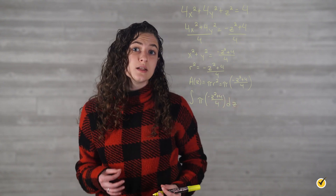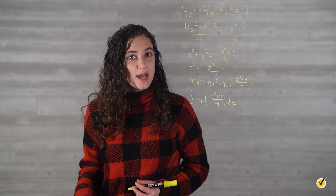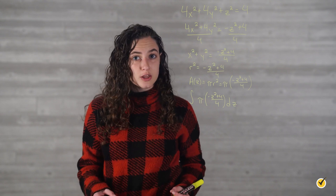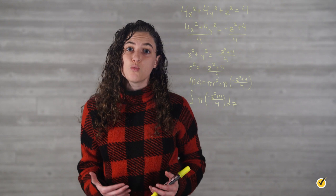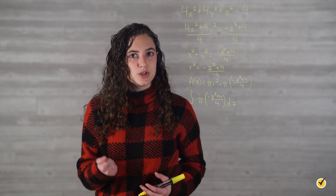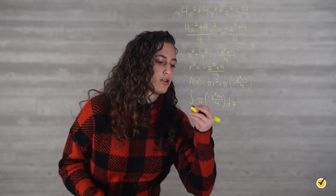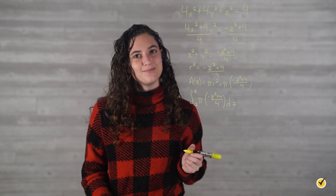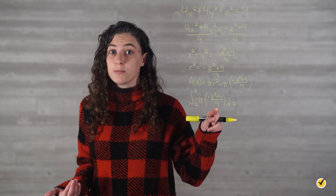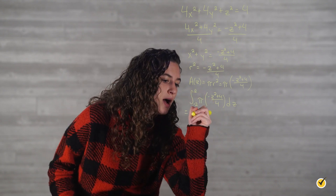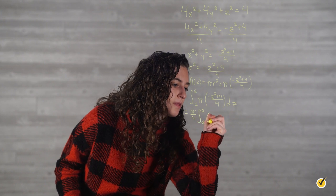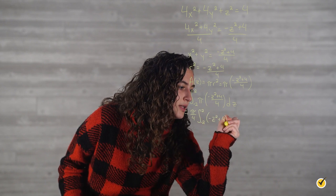Based on the graph, we know that the ellipsoid's lowest point is at z equals negative 2, and that its highest point is at z equals 2. If we didn't have the graph available to look at, we could solve for this by setting x and y equal to 0 in the equation of the ellipsoid. So the bounds of integration are negative 2 and positive 2. Since pi and the 4 in the denominator are both constants, we can move them outside the integral, giving us pi over 4 times the integral from negative 2 to 2 of negative z² plus 4 dz.